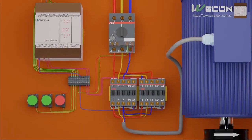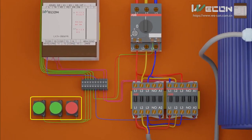We have three pushbuttons: two green pushbuttons and one red pushbutton with normally open contacts. The green pushbuttons will provide a signal to run the motor in forward or reverse directions, and both are connected at X0 and X1 inputs of the PLC respectively. The red pushbutton will provide the signal to stop the motor and is connected at the X2 input of the PLC.